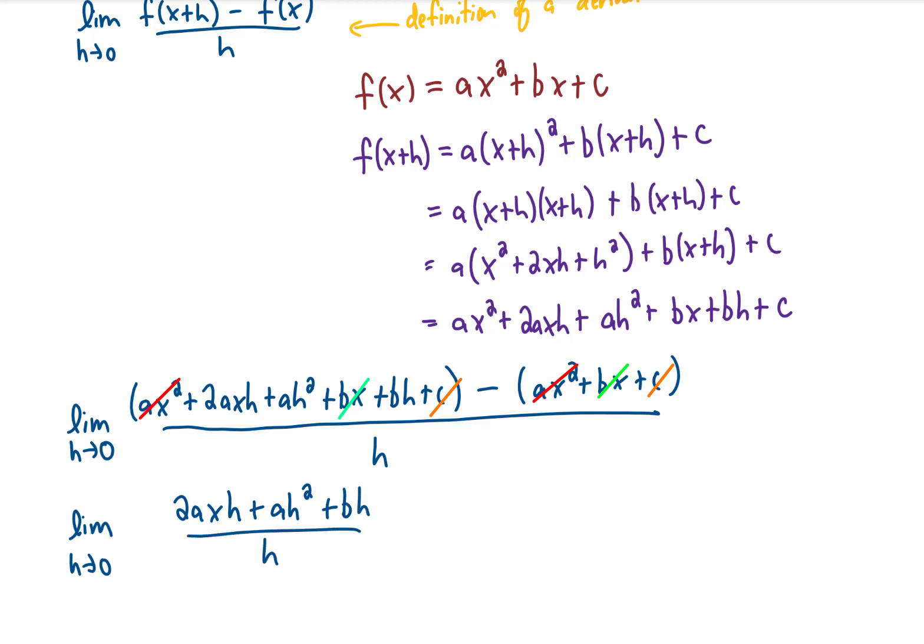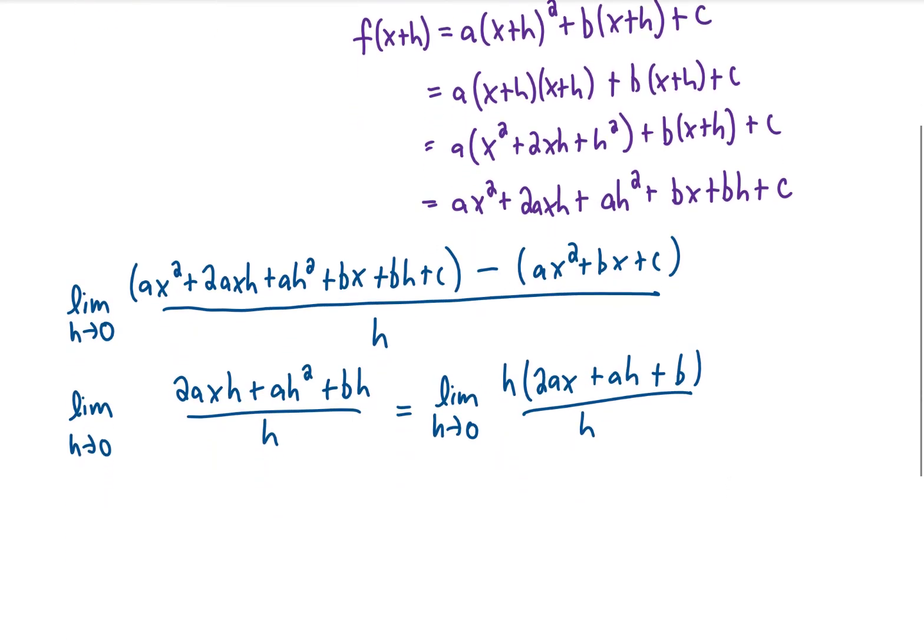And you'll notice that there's a factor of h in every one of these terms in the numerator. That's good because we want to cancel this h in the denominator. There's more than one way you can do this cancellation, but I'm going to factor an h from the numerator. And now that we've factored that h out, we can cancel the factor of h in the numerator with the factor of h from the denominator.